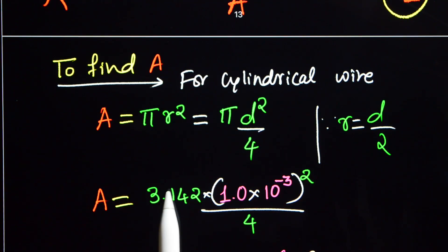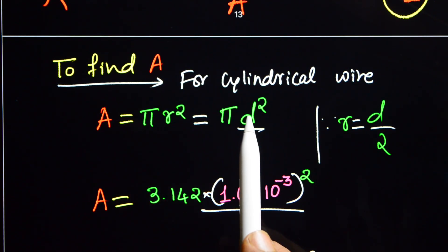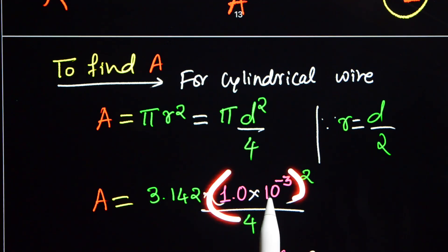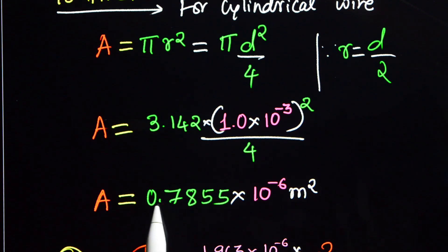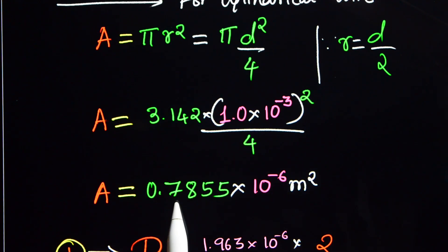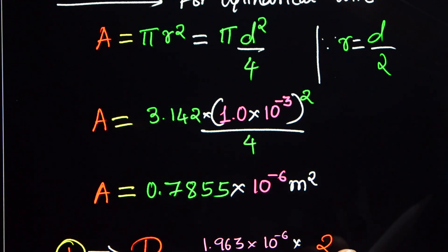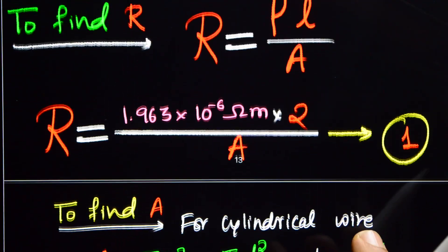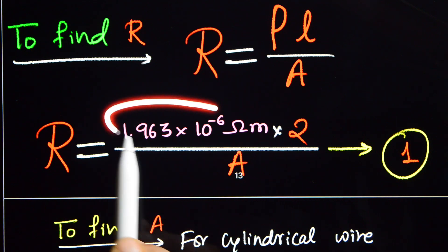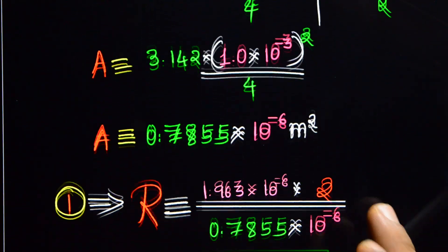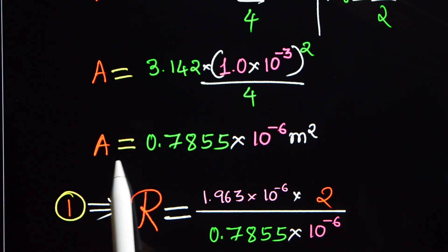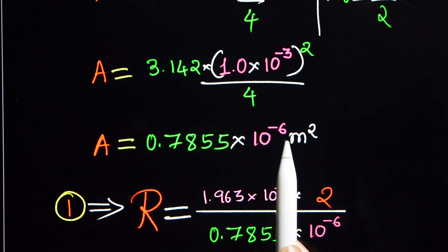Substituting values: pi is 3.142, D is 1.0 x 10⁻³ m, squared, divided by 4. On simplification, A is equal to 0.7855 x 10⁻⁶ meter squared. That is the cross-sectional area of the wire.